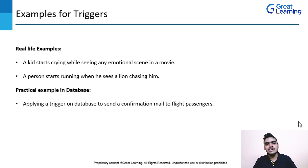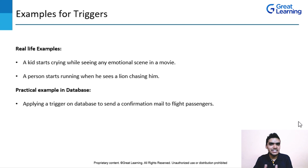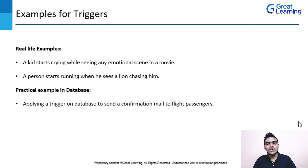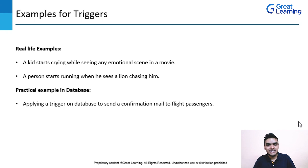Let's see some real-world examples of triggers. When a kid starts watching a movie and suddenly an emotional scene appears, he starts crying — the trigger is executed at that particular moment. Another example: when a man is walking in a forest and suddenly sees a lion, the trigger is executed. As soon as he sees the lion, he automatically starts running. This is how triggers are automatically executed in response to an event.